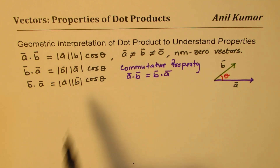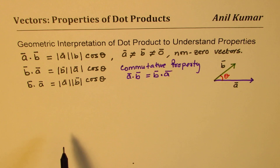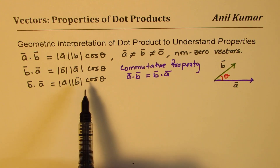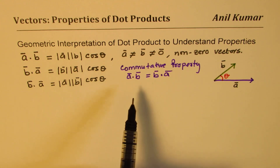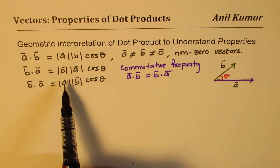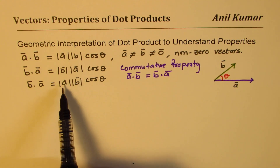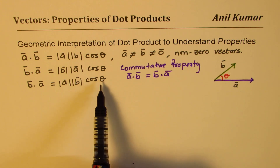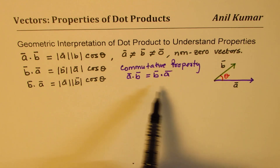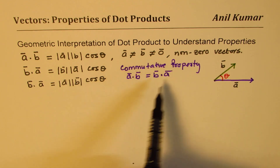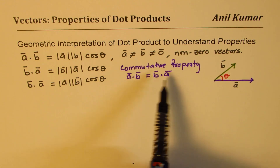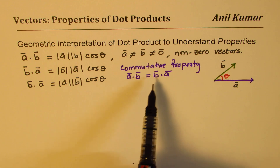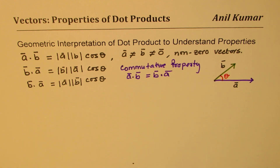The result is a scalar, so it's just the magnitudes being multiplied with the cosine of the angle. Nothing changes when the order is swapped; the quantity remains the same.